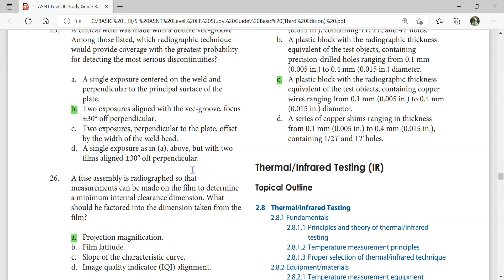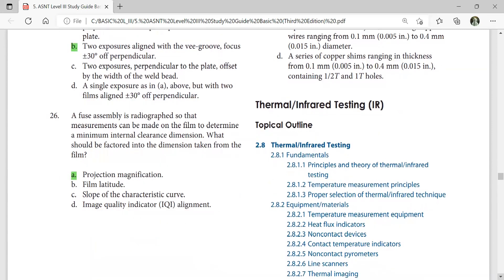A fuse assembly is radiographed so that measurements can be made on the film to determine minimum internal clearance dimensions. What should be factored into the dimension taken from the film? Projection magnification.